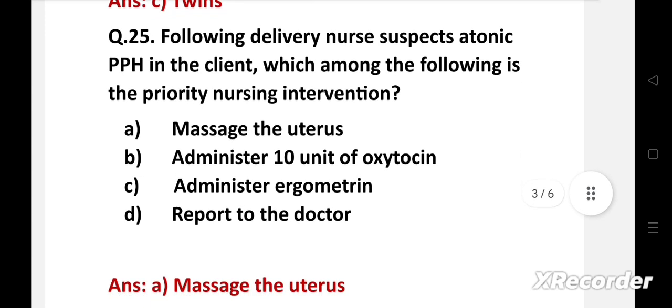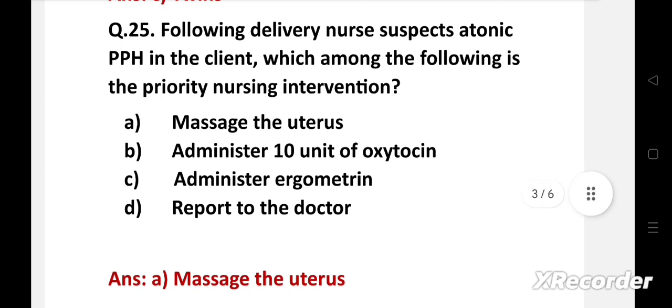Right answer is option A, massage the uterus. Although administration of oxytocin helps to arrest postpartum hemorrhage through uterine contraction, the most priority nursing intervention is to massage the uterus.